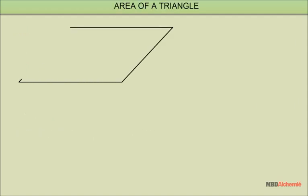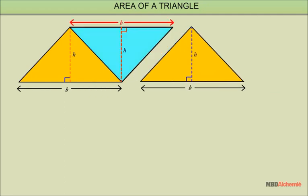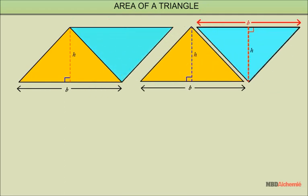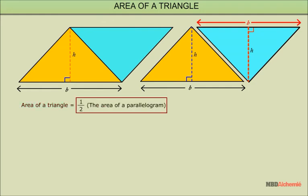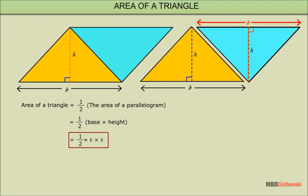Area of a triangle. Let us consider a parallelogram with base B and height H. If we cut it into two parts by drawing a diagonal inside it, then two triangles will be formed. So we can say that area of a triangle is equal to half the area of a parallelogram or is equal to 1/2 × B × H.